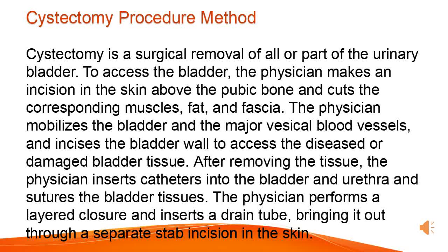After removing the tissue, the physician inserts catheters into the bladder and urethra and sutures the bladder tissues. The physician performs a layered closure and inserts a drain tube, bringing it out through a separate stab incision in the skin.